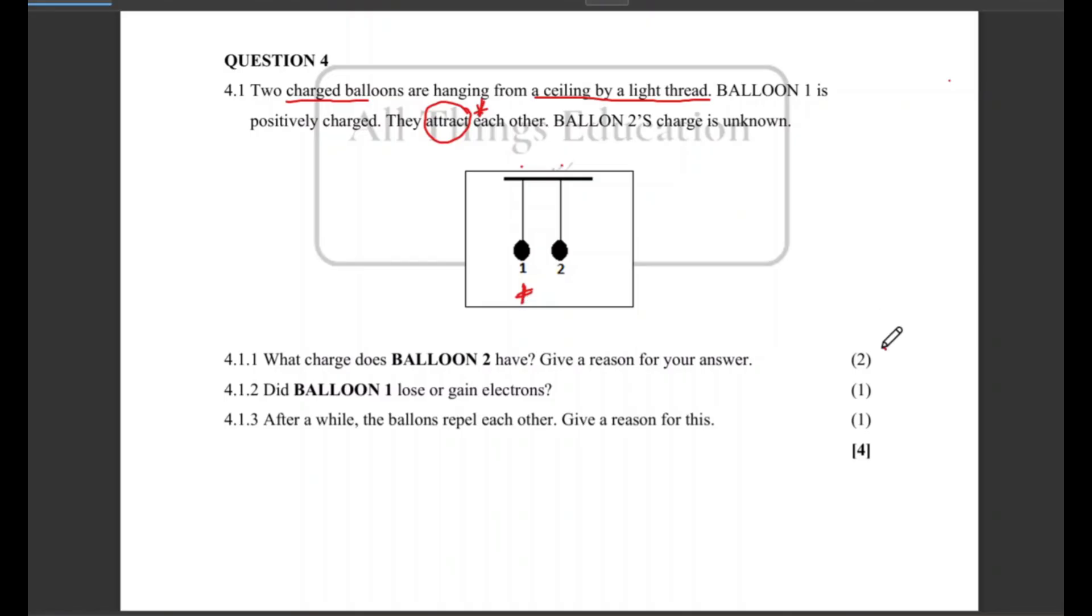So let's look at the first question. 4.1.1: What charge does balloon two have and give a reason for your answer. This is a two marks question, it's basically a two part question that's two marks allocated for this two part question. So make sure that you do not end up only answering one part of the question, you need to answer both. So the first part is asking us about the charge for balloon two.